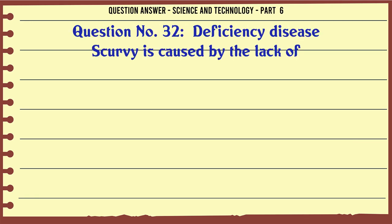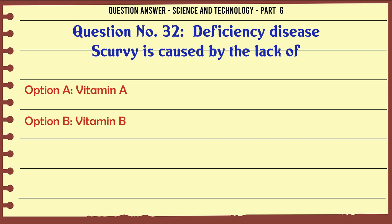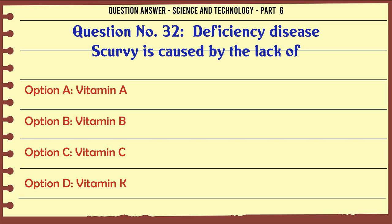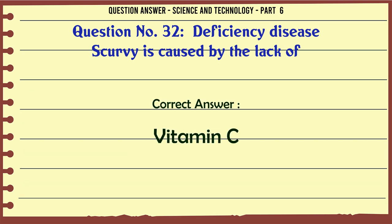Deficiency disease scurvy is caused by the lack of. A. Vitamin A. B. Vitamin B. C. Vitamin C. D. Vitamin K. The correct answer is Vitamin C.